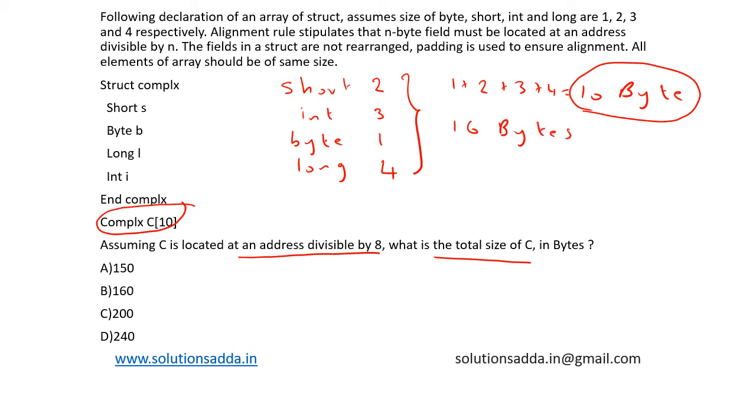And we are given an array of c of 10. So 10 such locations are needed. So 16 into 10, we have 160. So the total size is 160 bytes.